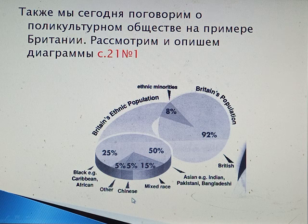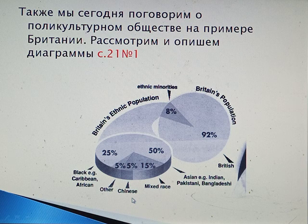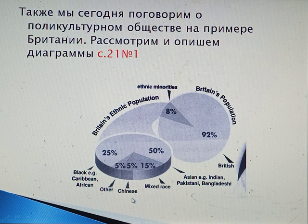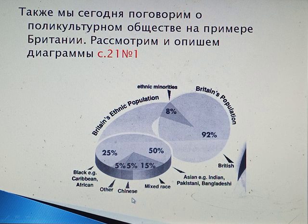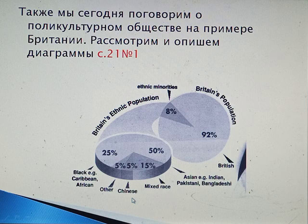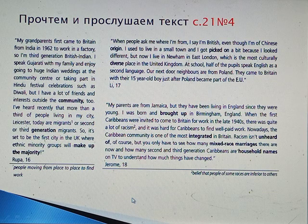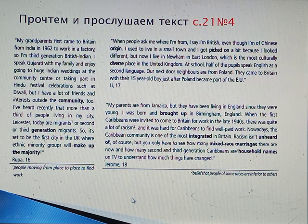What conclusion can we draw? The majority of British population are British people. Probably people from ethnic minorities have some problems and troubles while living in Great Britain, and there are surely some problems the British government has to solve. Let's have a look at what people say about living as different nationalities in one country — listening and reading, exercise 4, page 21.